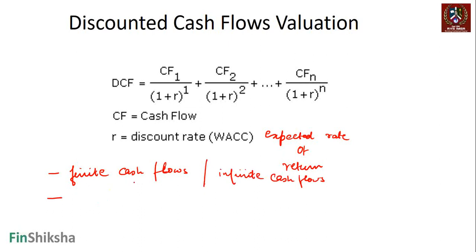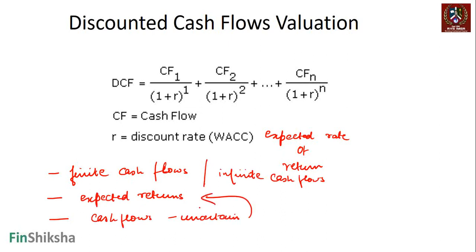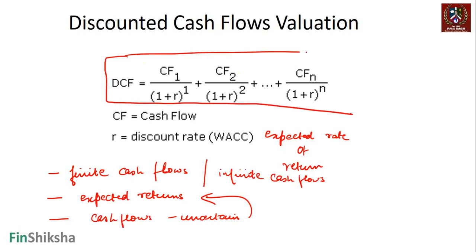Companies have infinite cash flows — you expect companies to exist till infinity. Also, in the case of bonds or simple cash flows, expected return is easy to calculate, but that's not so easy for companies. Finally, cash flows themselves are uncertain, and because they are uncertain, higher uncertainty means higher risk and a higher expected rate of return. Any DCF valuation takes this particular structure.